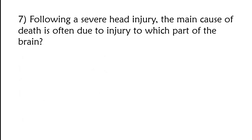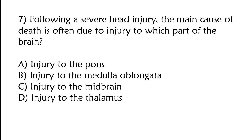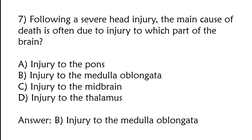Following a severe head injury, the main cause of death is often due to injury to which part of the brain? Injury to the pons, injury to the medulla oblongata, injury to the midbrain, injury to the thalamus. The correct answer is option B, injury to the medulla oblongata.